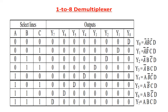This is the truth table for 1 to 8 D-multiplexor. The selection lines are A, B, C and the 8 outputs are Y0 to Y7. For selection lines 0,0,0, output Y0 is selected, so Y0 is equal to A bar B bar C bar D. For 0,0,1, output Y1 is selected, so Y1 is equal to A bar B bar C D. Similarly, all 8 outputs are written. For Y7, the selection lines are 1,1,1, so the output expression is A B C D. These product terms are implemented by AND gates.